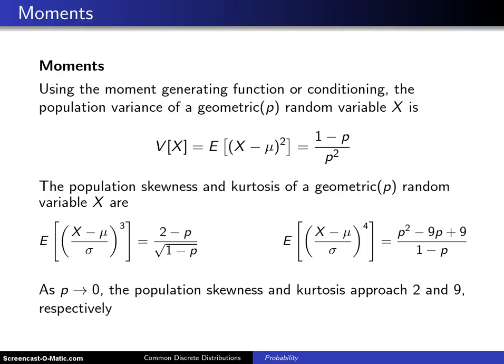The previous slide contained a derivation of the population mean for a geometric random variable. This slide contains a list of the second, third, and fourth moments of a geometric random variable.